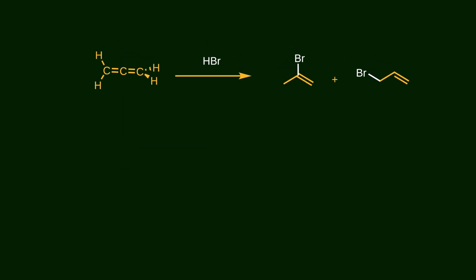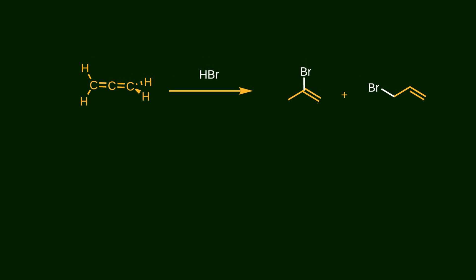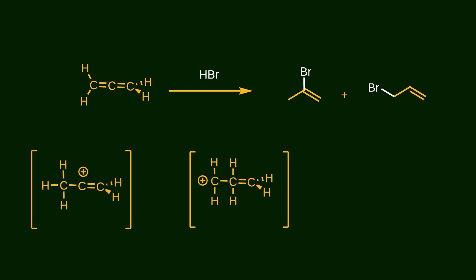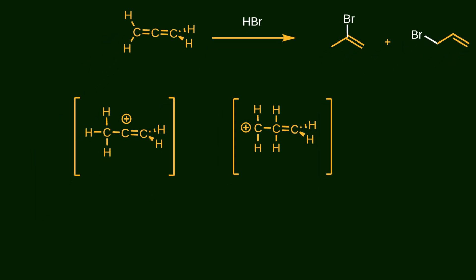Another important result of this unique arrangement of pi bonds is reflected in addition-type reactions. For example, what is the major product when this allene reacts with hydrogen bromide? There are two possible products. To figure out which one is major, we need to take a closer look at the transition states. From introductory organic chemistry, you might remember that in acidic conditions, pi bonds react to form the most stable carbocation intermediate.